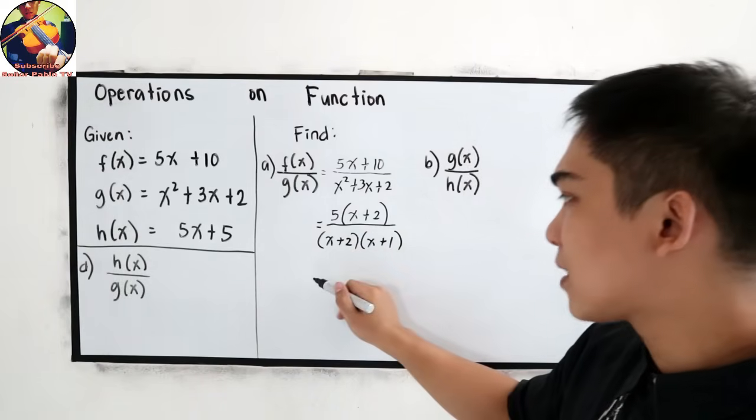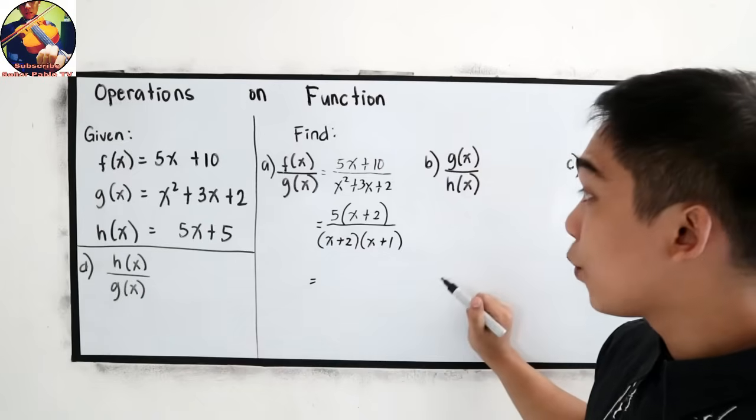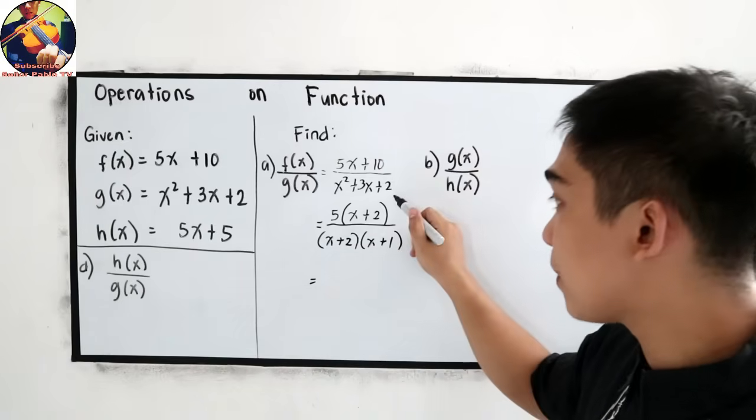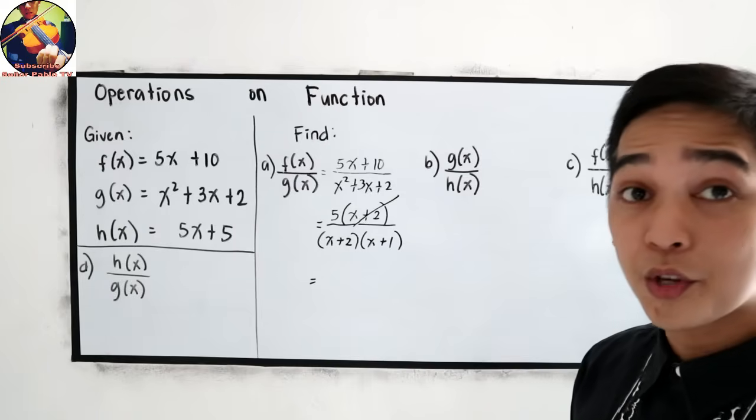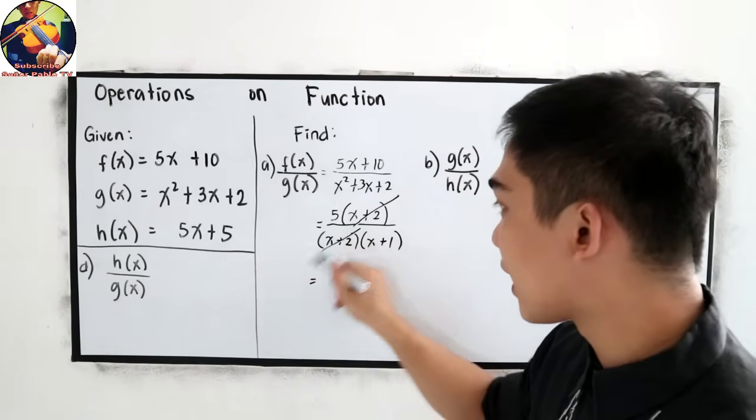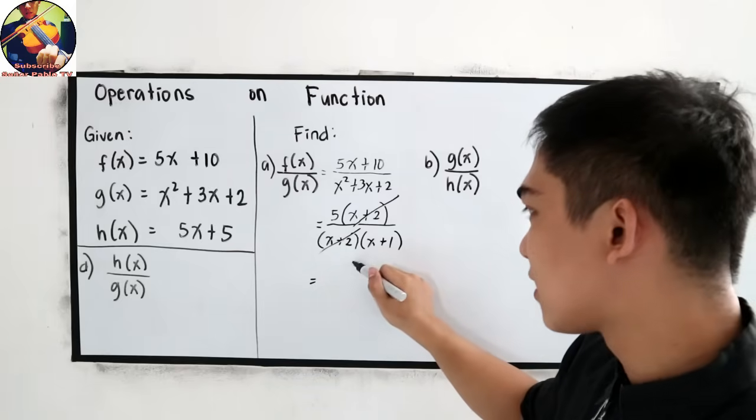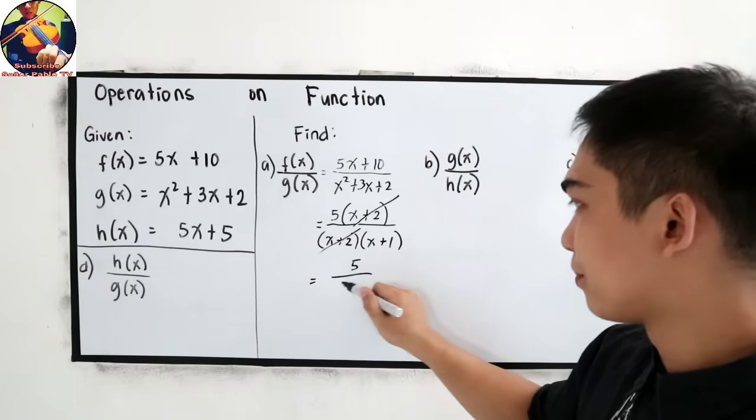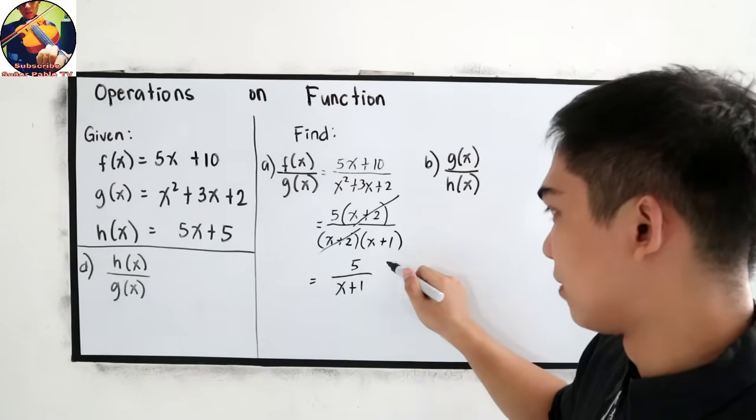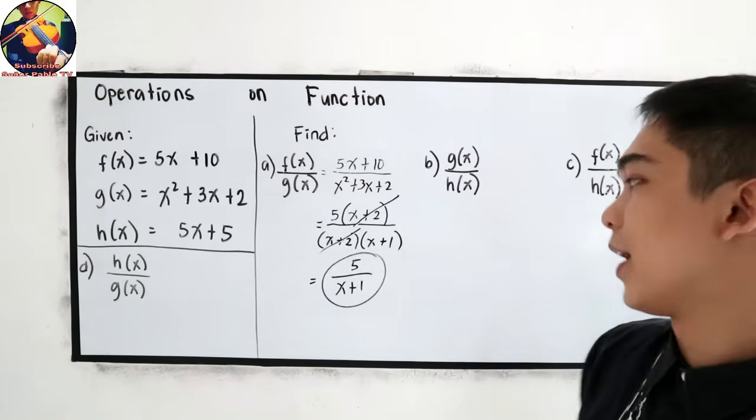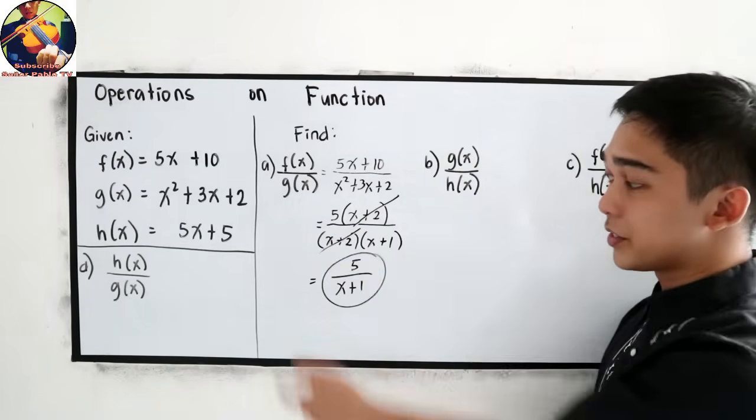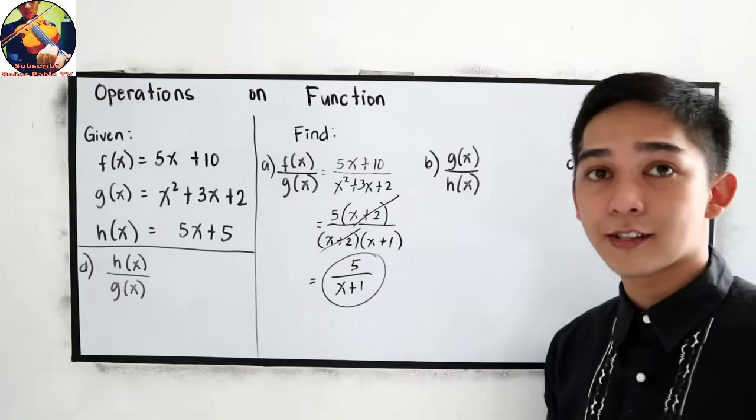Now, let us simplify. We can cancel x plus 2 in our numerator and x plus 2 in our denominator. So our final answer is 5 over x plus 1.